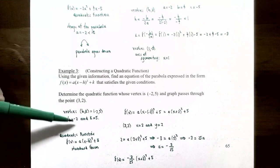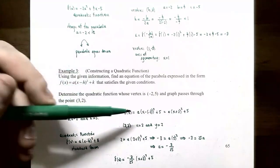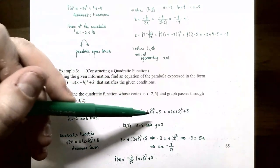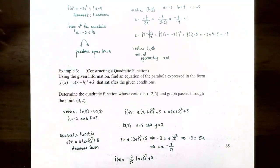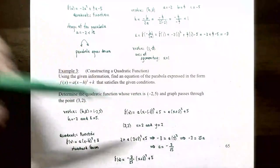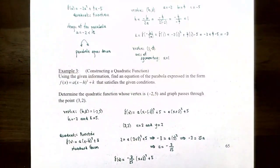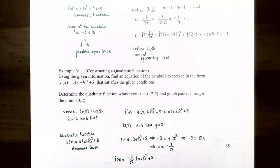To find a, we use the other point. If the parabola must pass through (3, 2), substitute x = 3 and y = 2 into the function: 2 = a(3 + 2)² + 5. Inside the parentheses you get 5, so it becomes 2 = a(25) + 5. Subtracting 5 from both sides gives -3 = 25a, so a = -3/25.